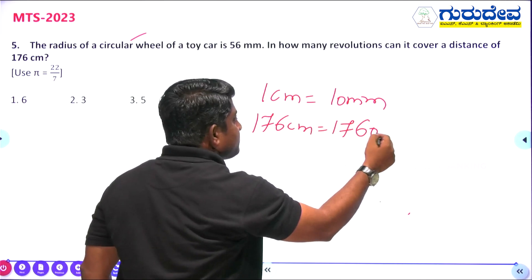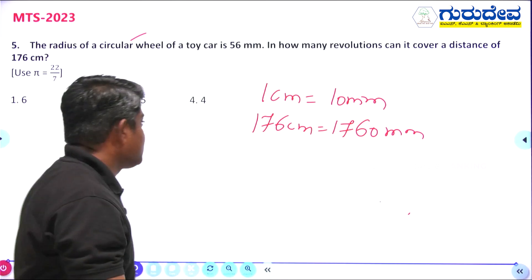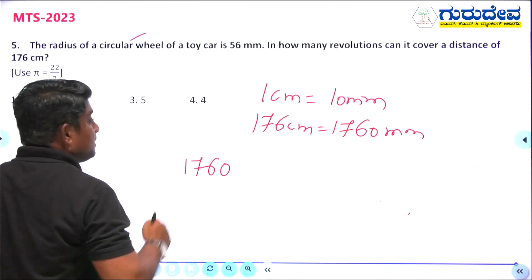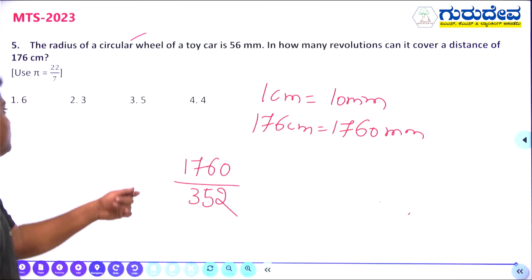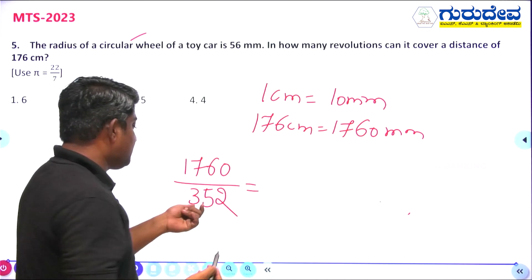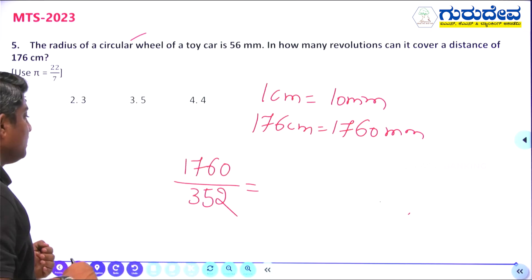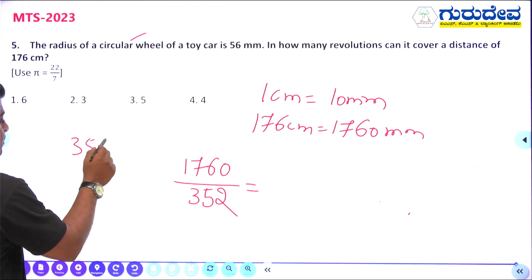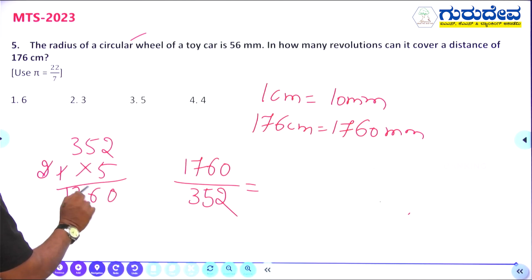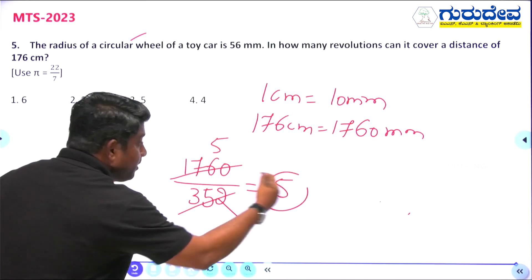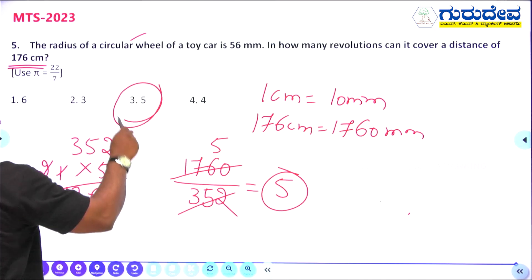One centimeter equals 10 mm, so 176 cm = 1760 mm. Total distance is 1760 mm, and in one revolution the wheel covers 352 mm. Number of revolutions = 1760 ÷ 352 = 5. So the wheel must make 5 revolutions to cover 176 centimeters. Option number 3 is the right answer.